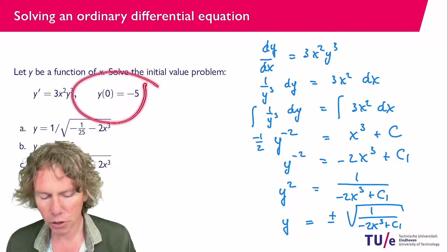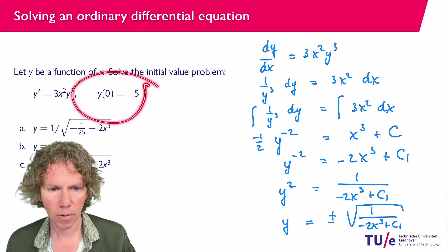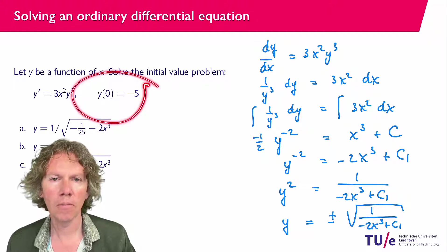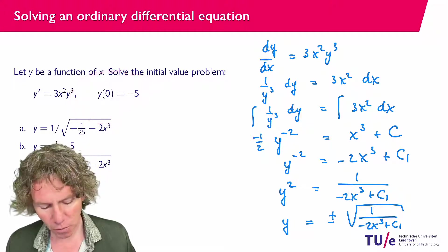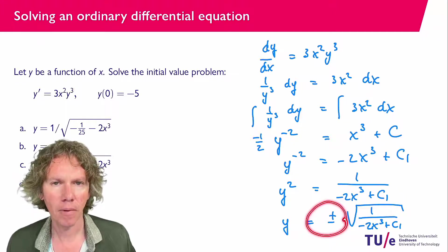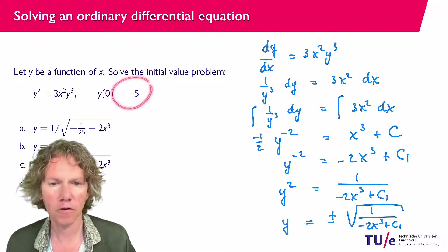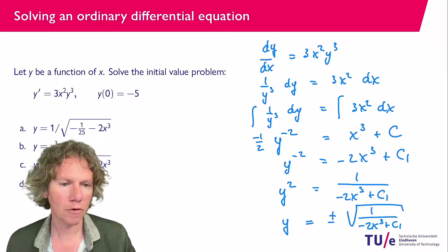Okay so next what I'm going to do is I'm going to use the initial condition so if I plug in x equals 0 then the function should become minus 5 so that tells me that here I should take the negative, the minus sign, because only then I can end up with a minus 5 and then to get to the 5 that's going to give me the c1 here.